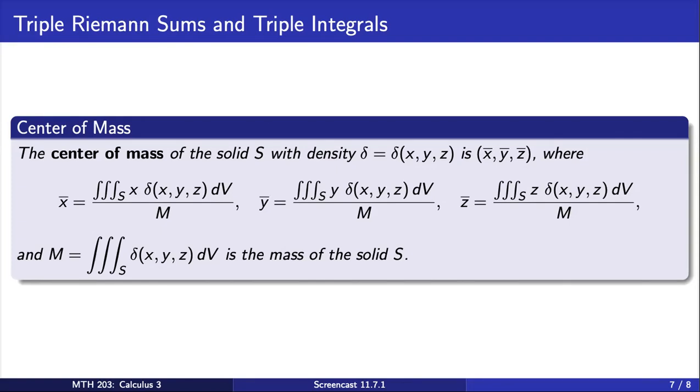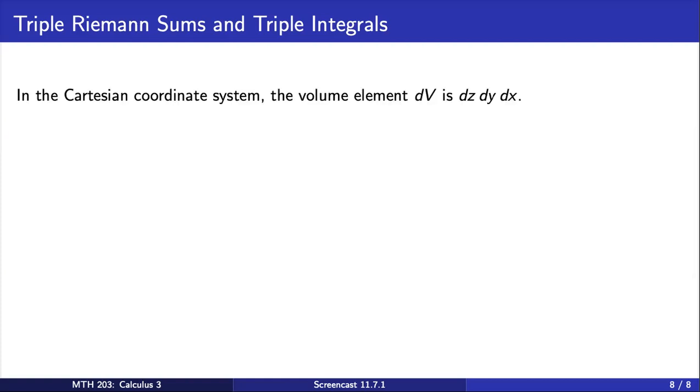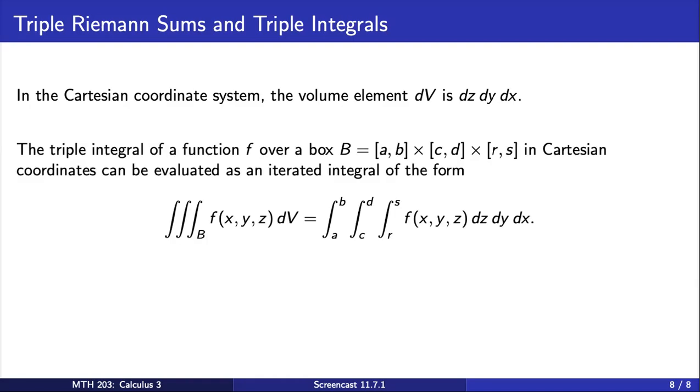One last item to note concerns evaluating triple integrals. In Cartesian coordinates, the volume element dV is dz dy dx. Therefore, the triple integral of a function f over a box can be evaluated as an iterated integral, just like we had for double integrals.